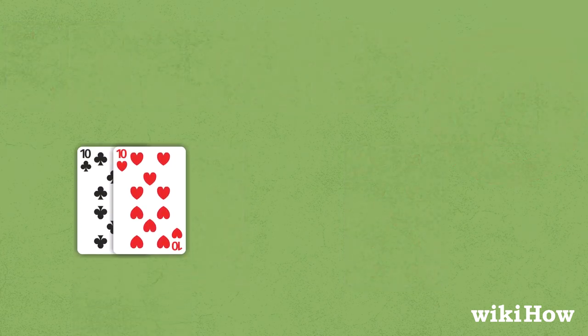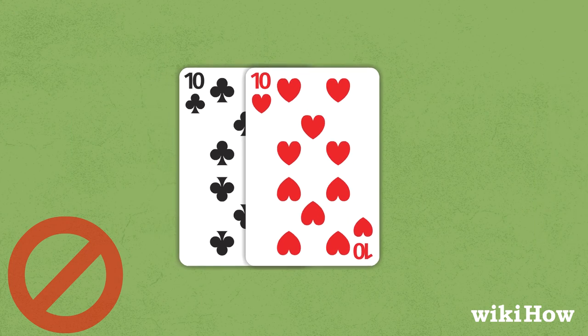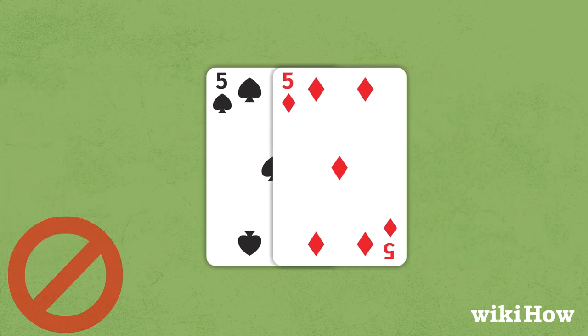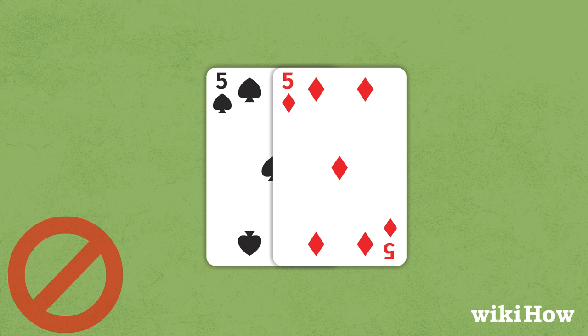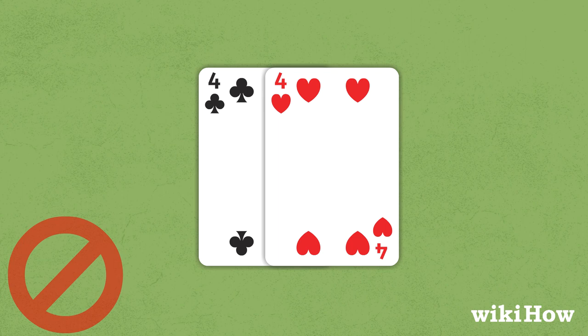Finally, there are some pairs you should never split. A pair of 10s on its own is a good hand, and you have a much lower chance of making a better one if you split the pair. Likewise, a pair of 5s is a strong starting hand that you'll only weaken by splitting it. Stay away from splitting 4s, too. You'll likely just end up with two weak hands.